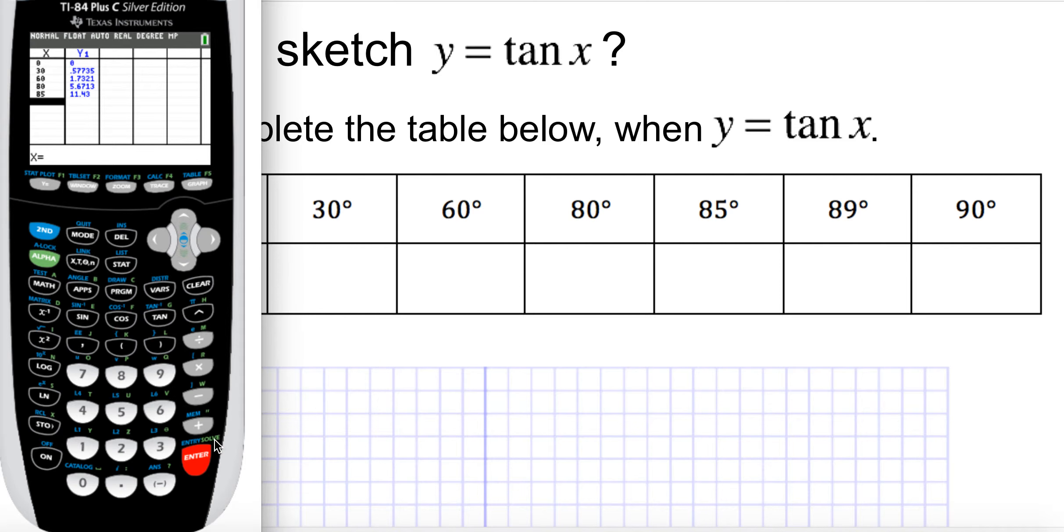Notice that sine and cosine went only up to 1 and negative 1, but in case of tangent, it can go far further. So how about 89, 57. Wow, that's very high. But if I plug in 90, then it's going to be error. So what does that mean? How does this graph?